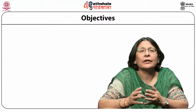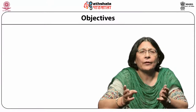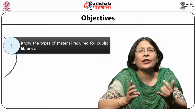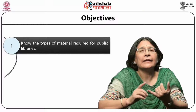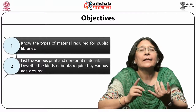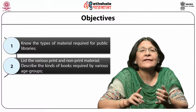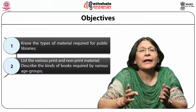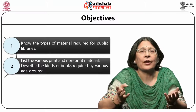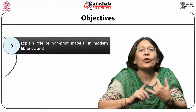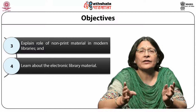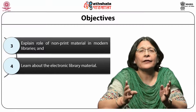Let us now examine the objectives of this particular module. Firstly, we will know the types of material required for public libraries — in fact, we require a variety of material. Then we will be listing the various print as well as non-print material available in libraries. We will then describe the kind of books required by various age groups, explain the role of non-print material in modern libraries, and also learn about electronic library material, which is the need of the hour.